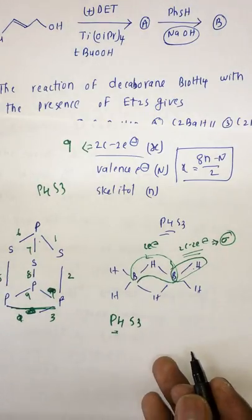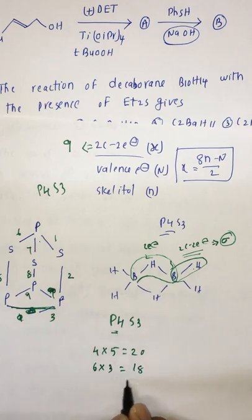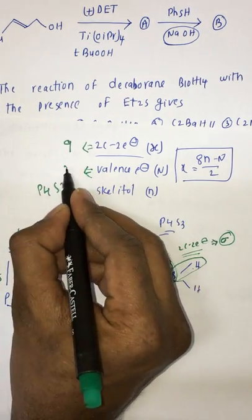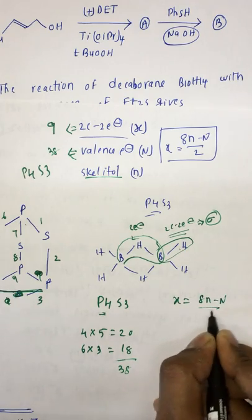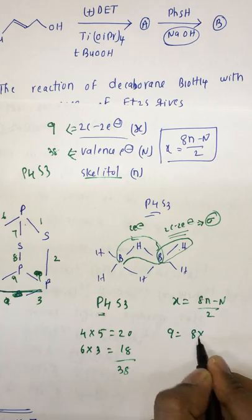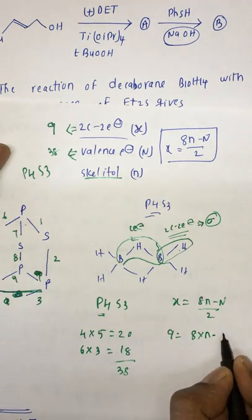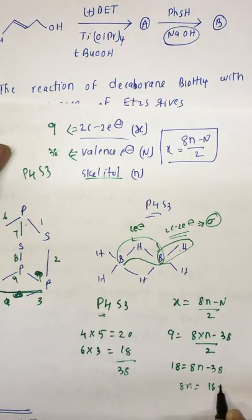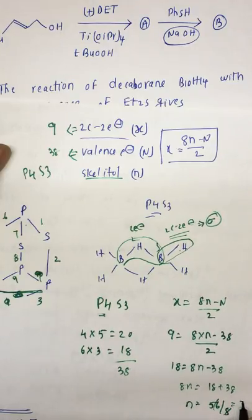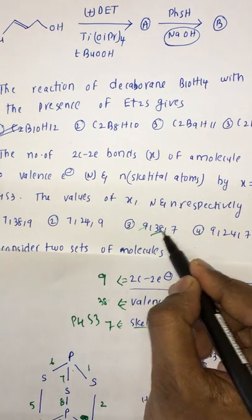Using the formula x = (8n − N) / 2: we have x = 9, N = 38. So 9 = (8n − 38) / 2, which gives 18 = 8n − 38, then 8n = 56, so n = 7 skeletal atoms. The answer is x = 9, N = 38, n = 7.